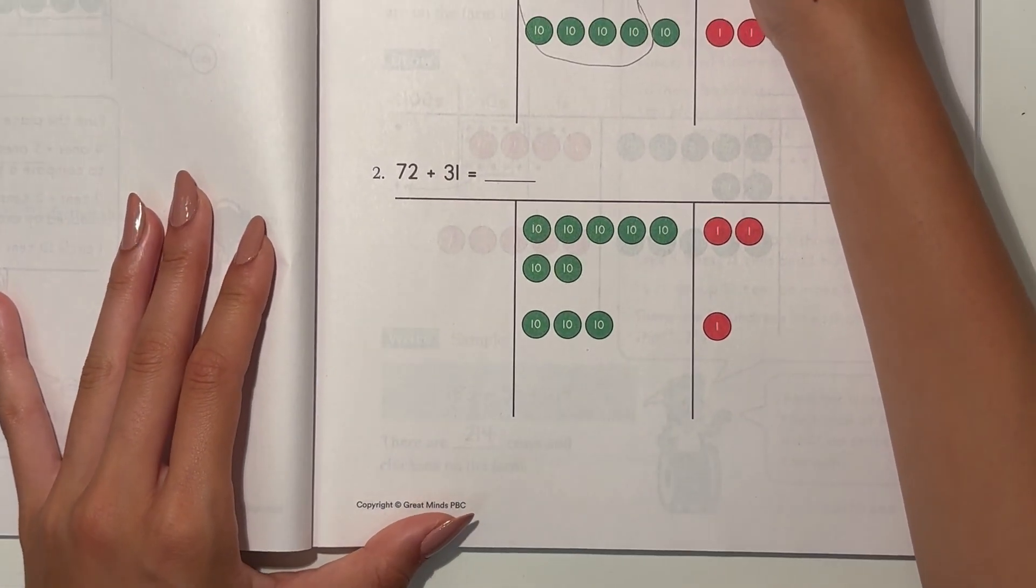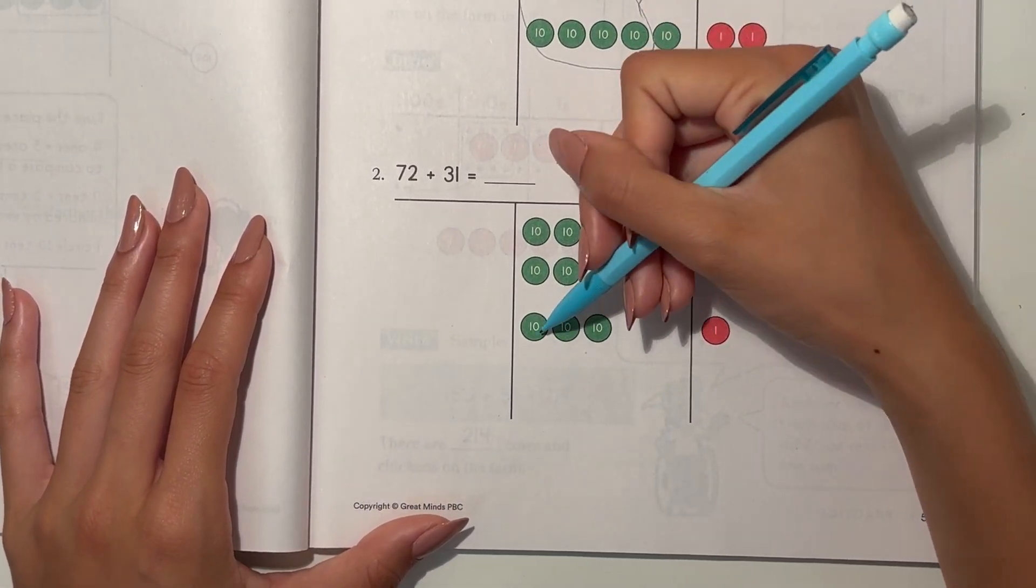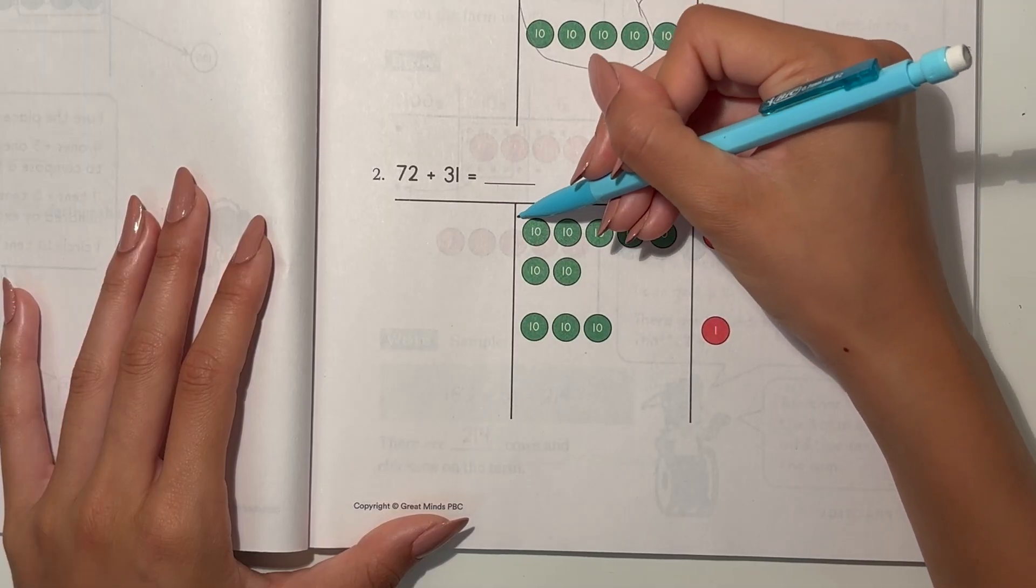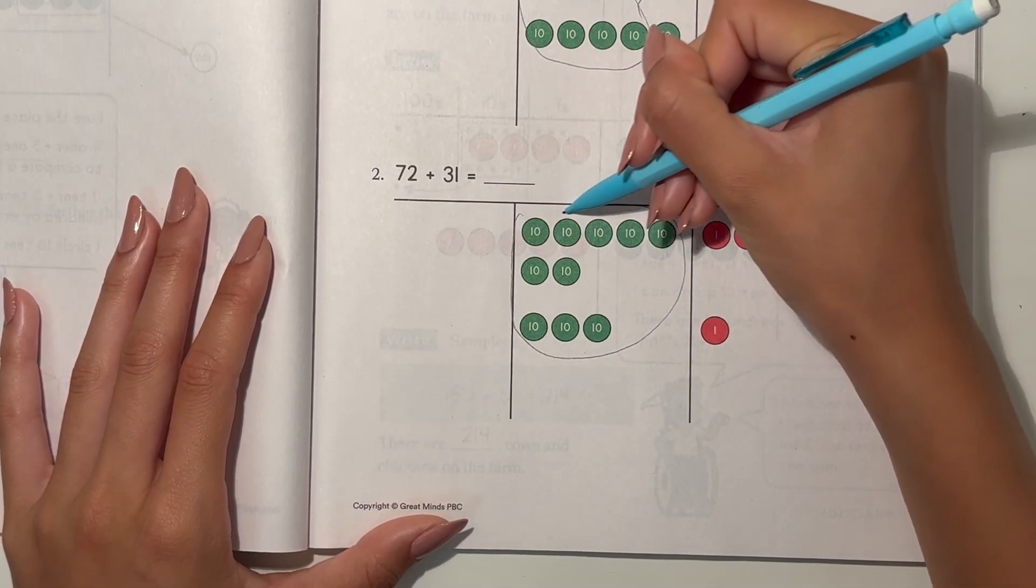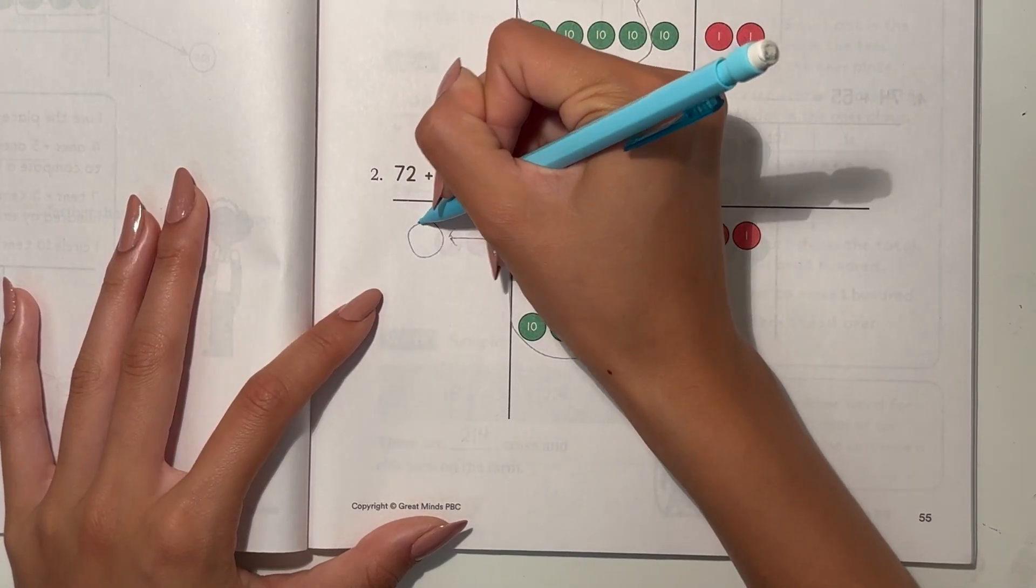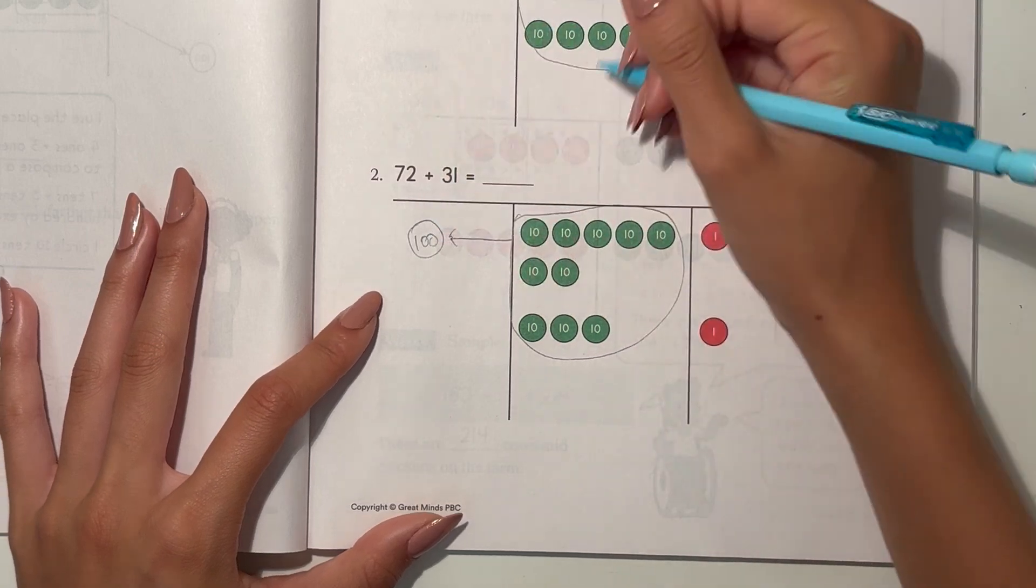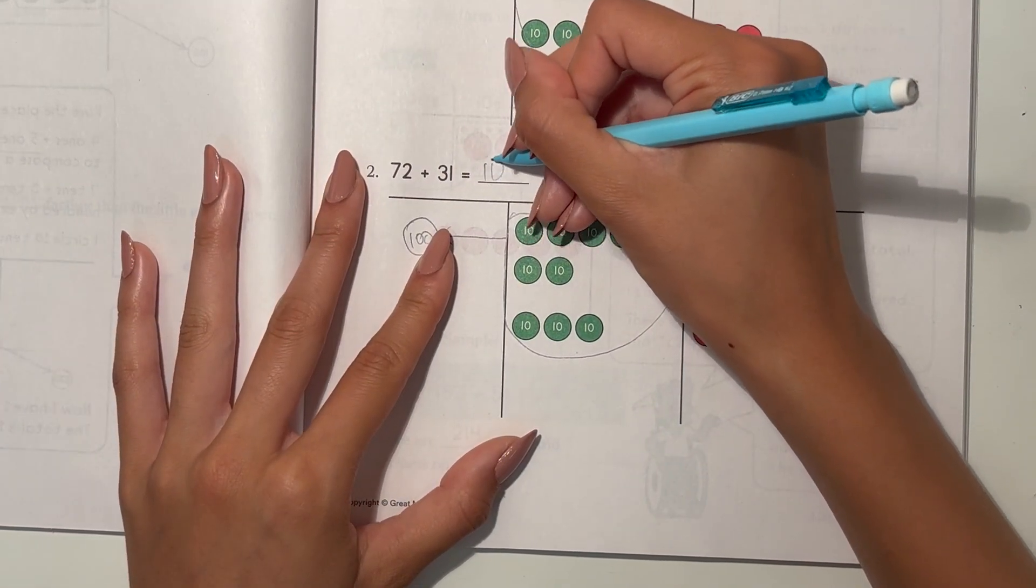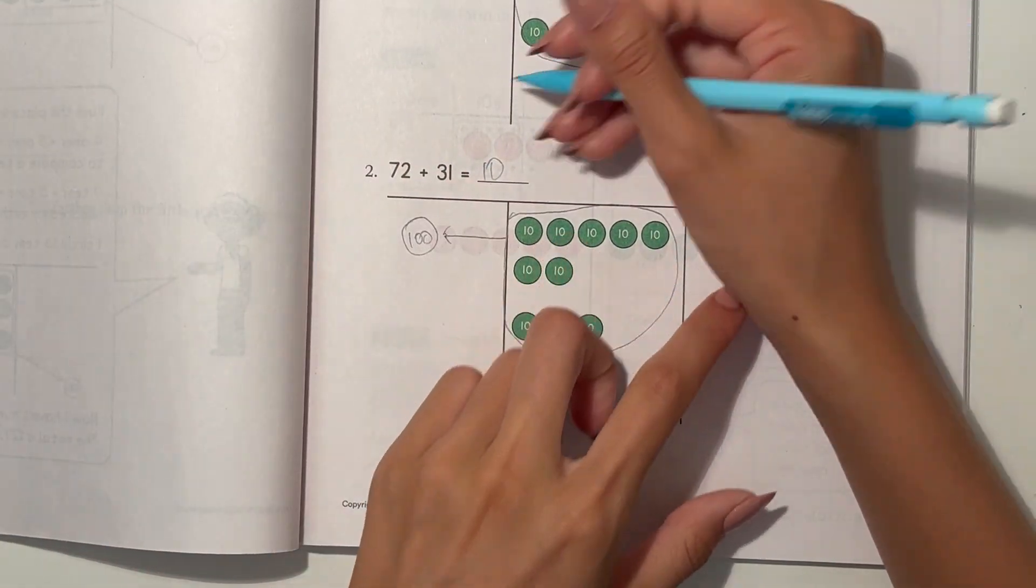Number 2. We have 72 plus 31. So this together is 10 tens. So then this becomes 100. So our answer is 100, no tens left over, 3 ones, 103.